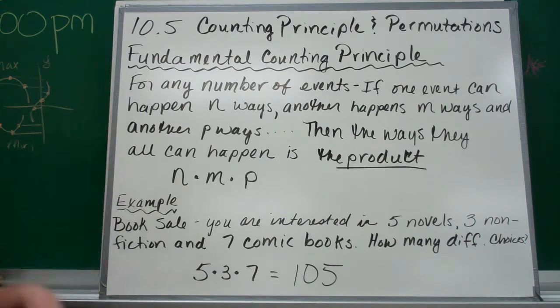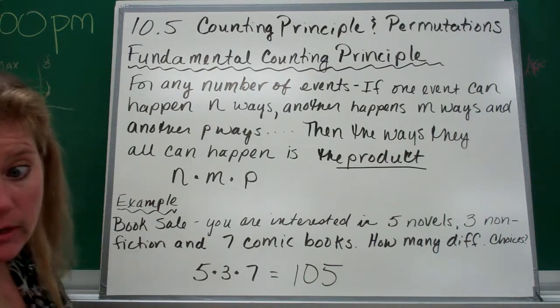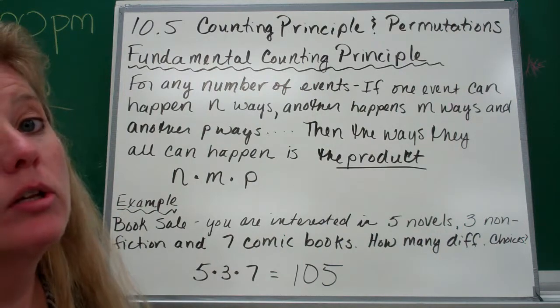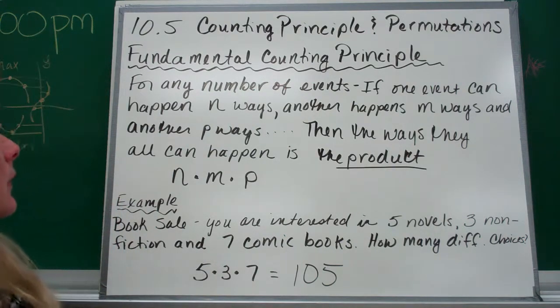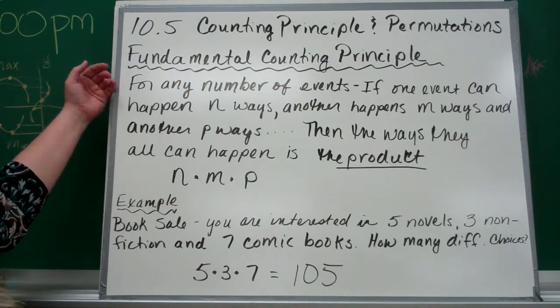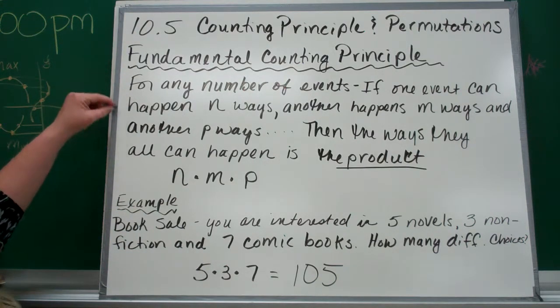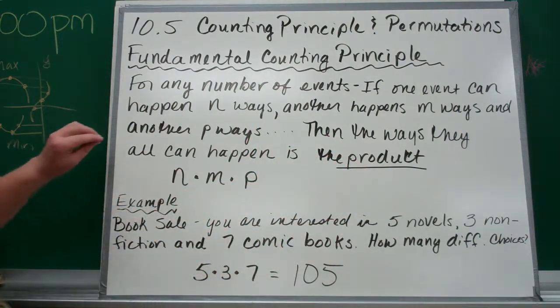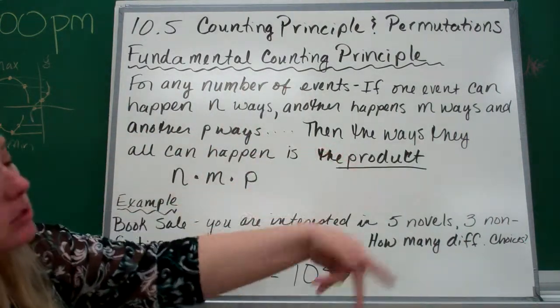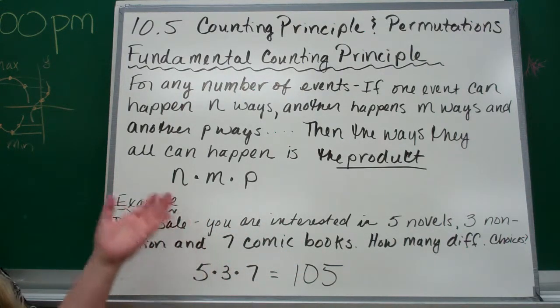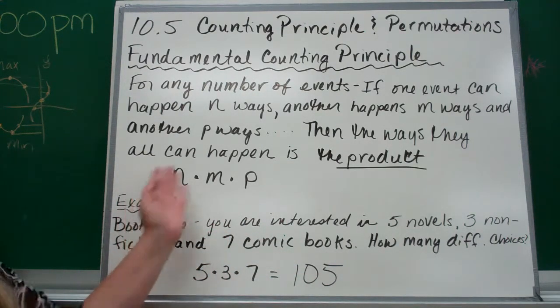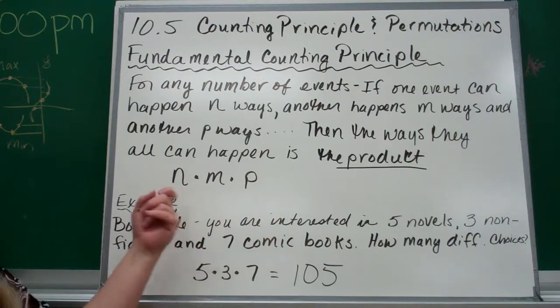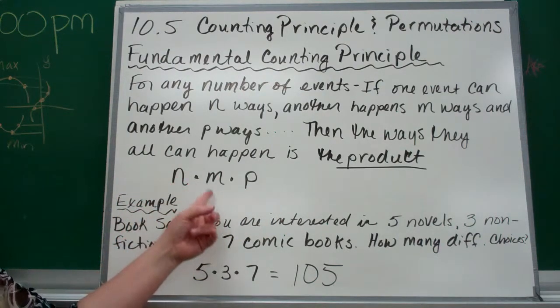Counting principle and permutations. For any number of events, if one event can happen in n ways, another happens in m ways, and another in p ways, and so on, then the ways they can all happen is the product of each one, so n times m times p.